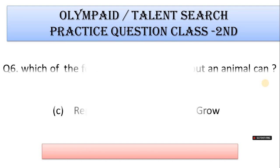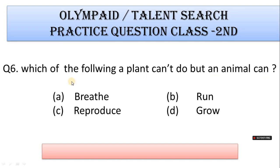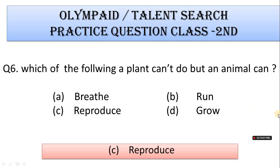Number 6: Which of the following can a plant not do but an animal can? A. Breathe, B. Run, C. Reproduce, D. Grow. Correct answer is Option B. Run.